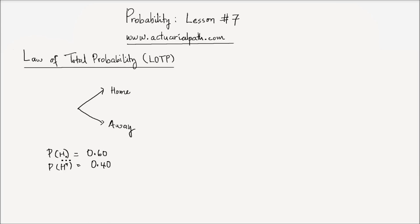So H, the event H, is the event of playing at home. And the complement of playing at home is playing away. I'm going to use a probability tree here. On this branch I'm going to write 0.6, which is the probability of playing at home. And on this branch, the probability of playing away, H complement, which is 0.4.